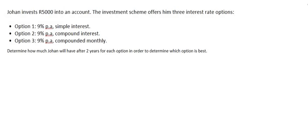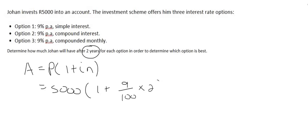Option number one says that Johan will invest five thousand Rand at nine percent per annum simple interest. Determine how much money he will have after two years. So remember, simple interest uses the formula as shown, where P will be his starting amount which is five thousand, the interest rate is nine percent per year, so that's just gonna be nine over a hundred times by the number of years which is two. If you do that, you would get an answer of five thousand nine hundred Rand. So that's how much Johan would have if he chose that investment.